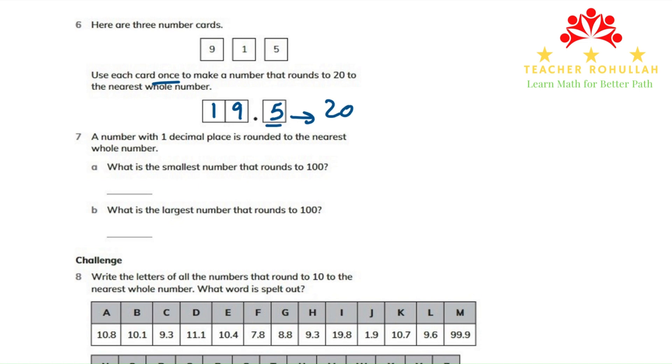In question number seven, it says, a number with one decimal place is rounded to the nearest whole number. What is the smallest number that rounds to 100? The smallest number that rounds to 100 is 99.5 because if you have 99.4, it rounds to 99. Once it's 99.5, it rounds to 100.